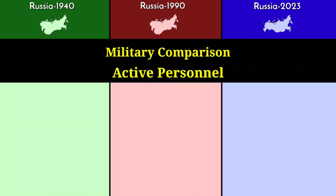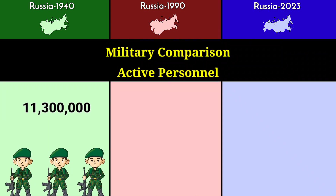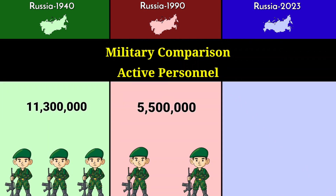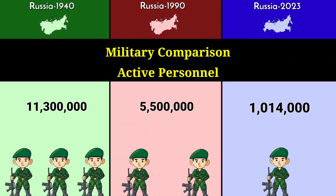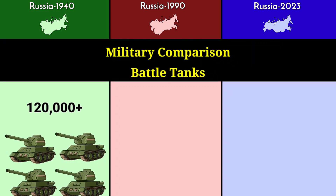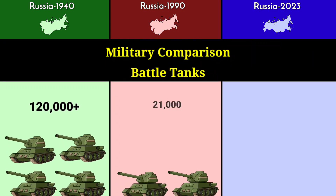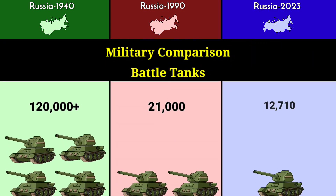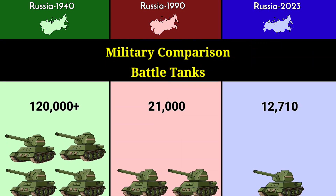Military comparison — active personnel: 11.3 million in 1940, 5.5 million in 1990, and 1 million in 2023. Battle tanks: 120,000 in 1940, 21,000 in 1990, and 12,710 in 2023.